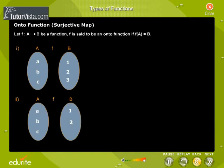Onto function or surjective map. Let f: A → B be a function. f is said to be an onto function if f of A is equal to B.